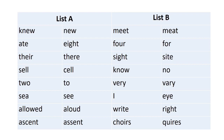'Their,' 'there,' and 'they're': 'Their car is over there.' 'Sell' and 'cell.' 'To,' 'too,' and 'two.' 'See' and 'sea.' 'Allowed' and 'aloud': 'You're not allowed to speak aloud in the class.'